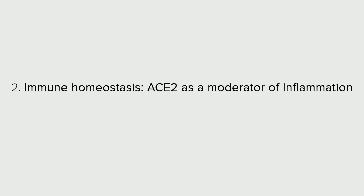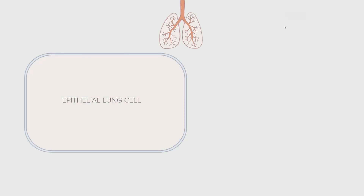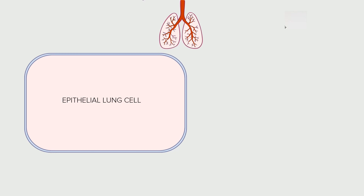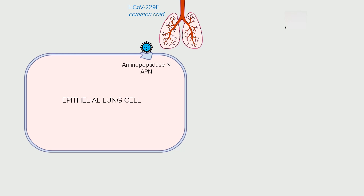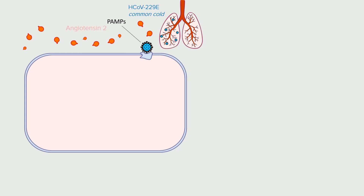This is what we're seeing in the COVID-19 epidemic. Let's take a look at how a lung epithelial cell responds to a benign coronavirus, like HCoV-229E, that causes the common cold. HCoV infects cells by attaching to a membrane protein called aminopeptidase N, APN. As this happens, parts of the virus surface molecules — PAMPs — are recognized by the innate immune system, leading to the production of angiotensin 2, or ANG2. The battle begins.